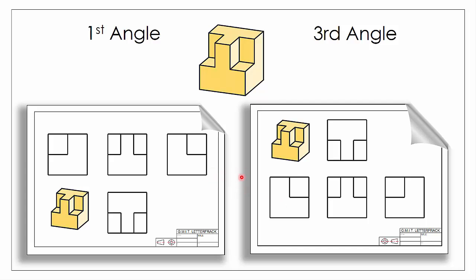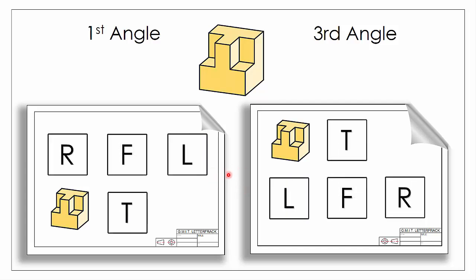The differences can be summarised like so. In first angle, if we're looking from the left it appears on the right; if we're looking from the right it appears on the left; if we're looking from the top it appears below the object. We're looking through the object and our image is cast at the far side — that's the idea behind first angle. Whereas in third angle, if looking from the left the image appears on the left; from the right it appears on the right; from above it appears above the object.